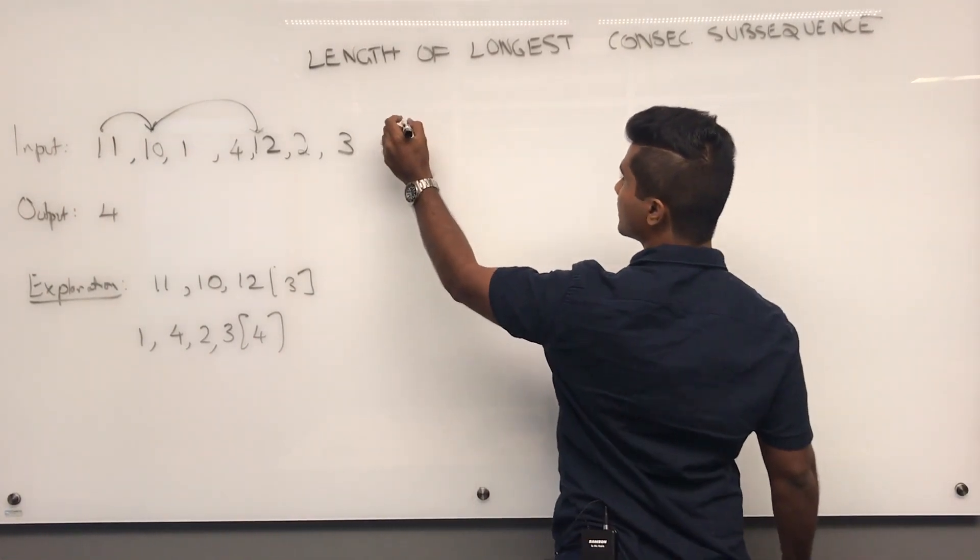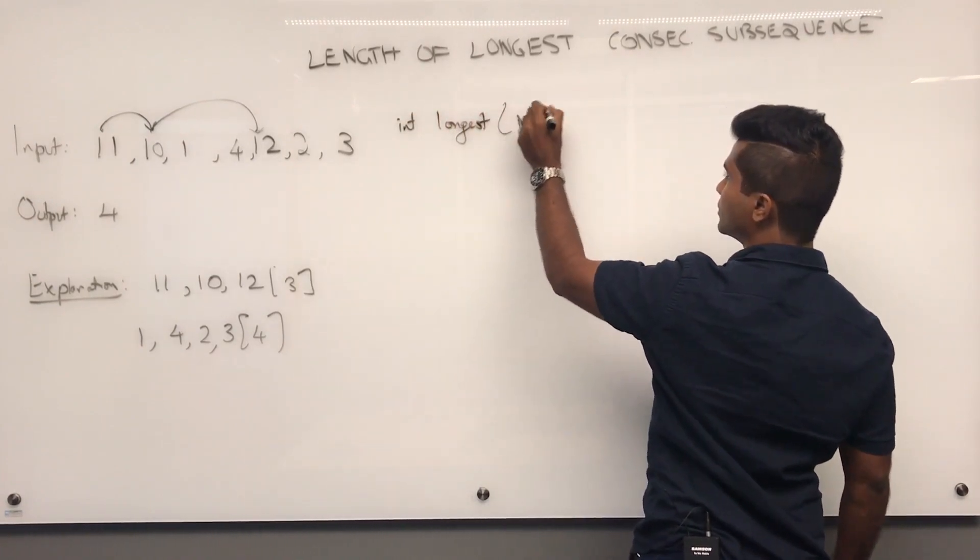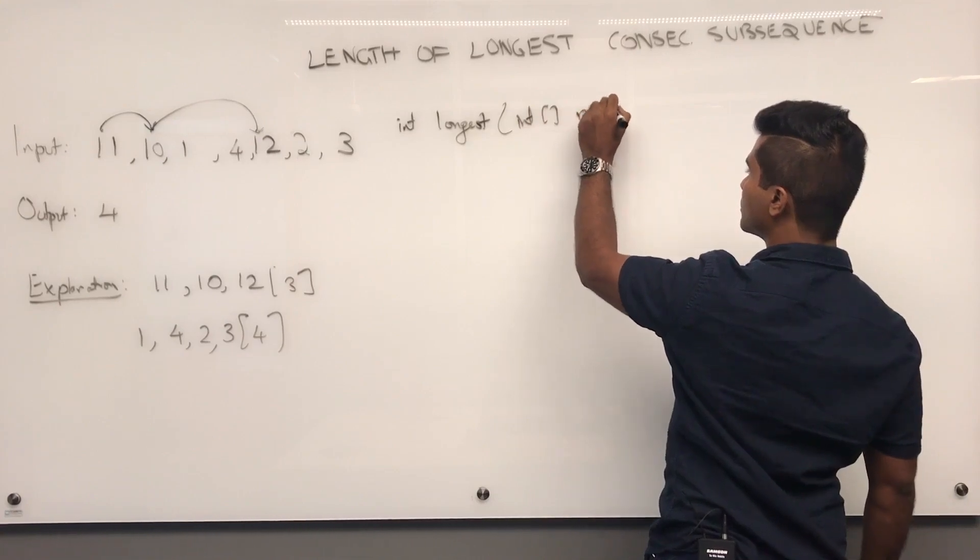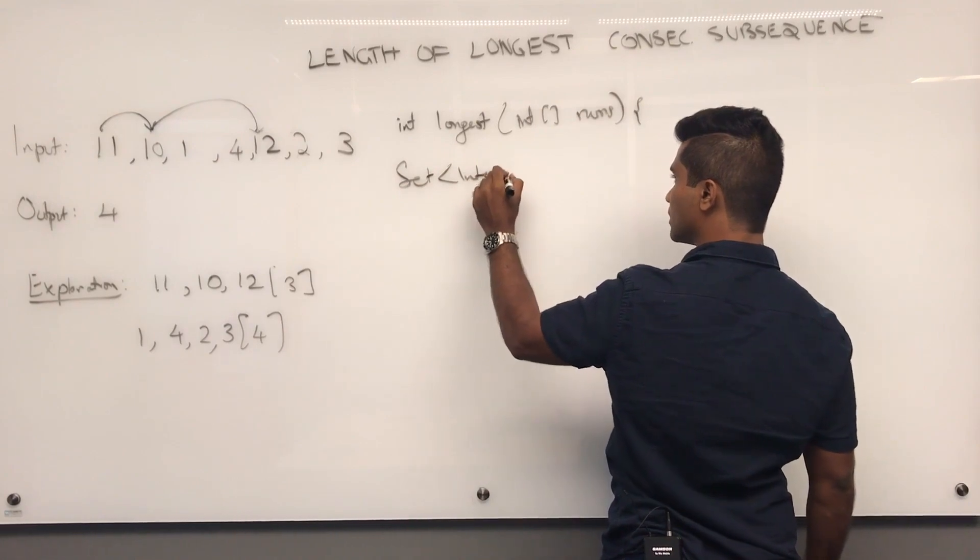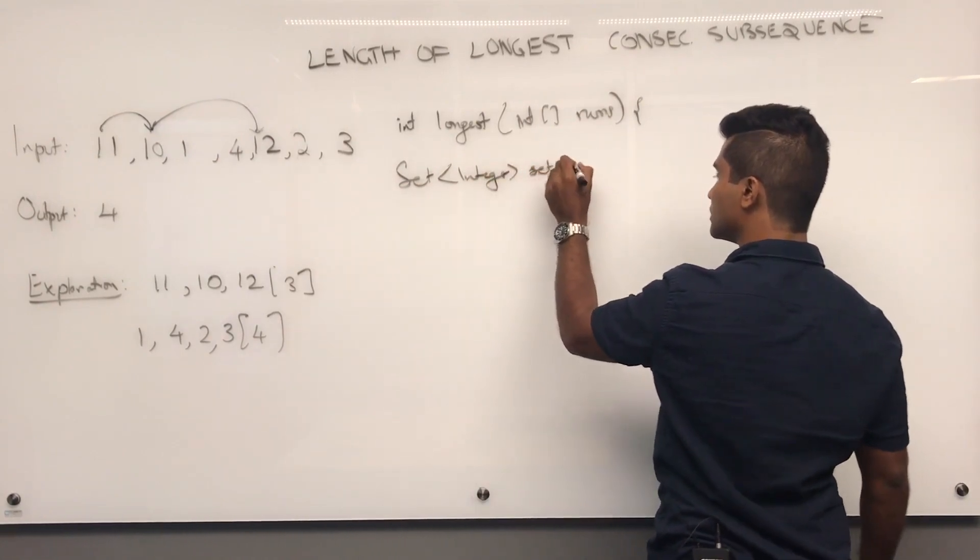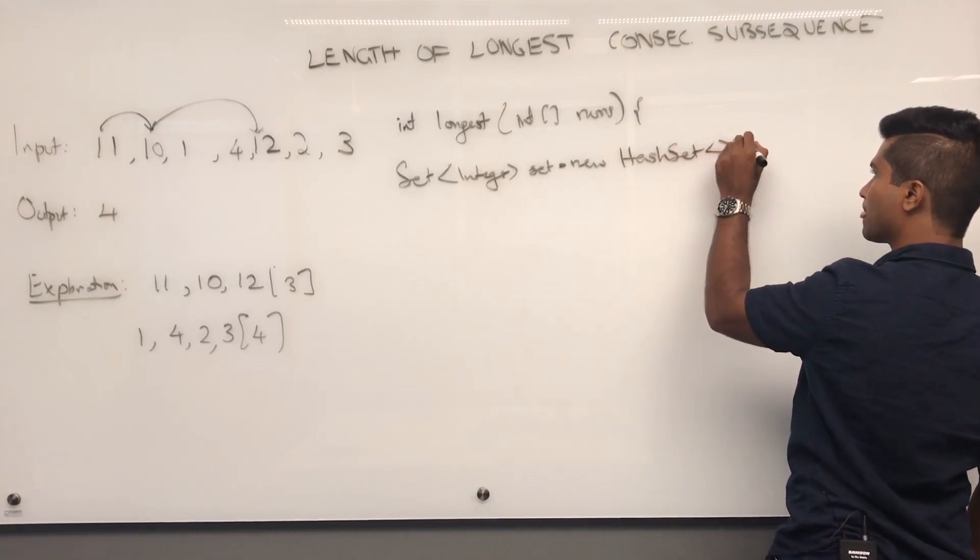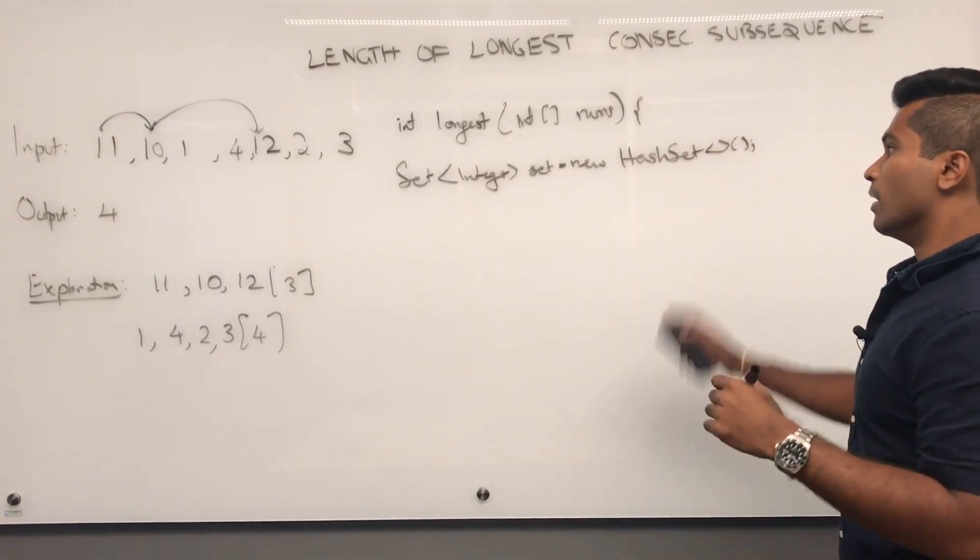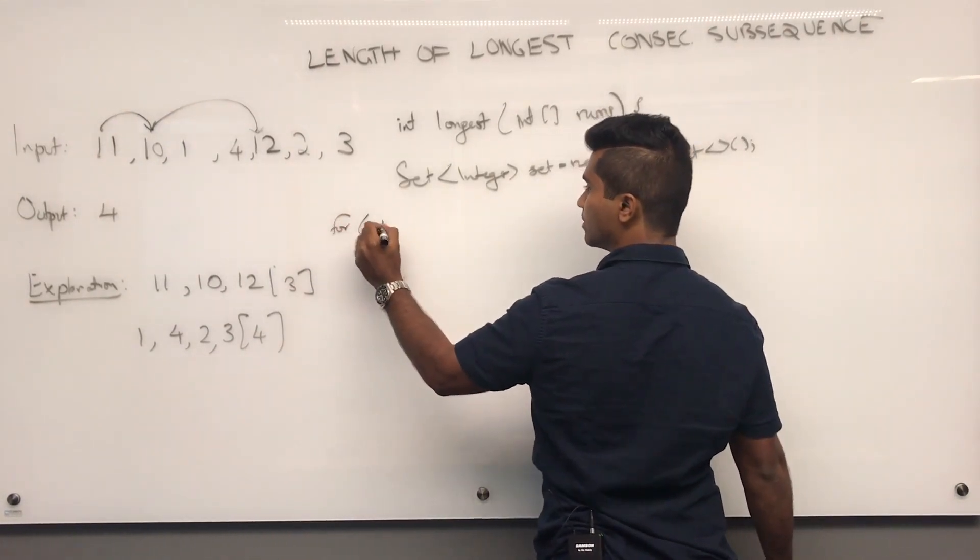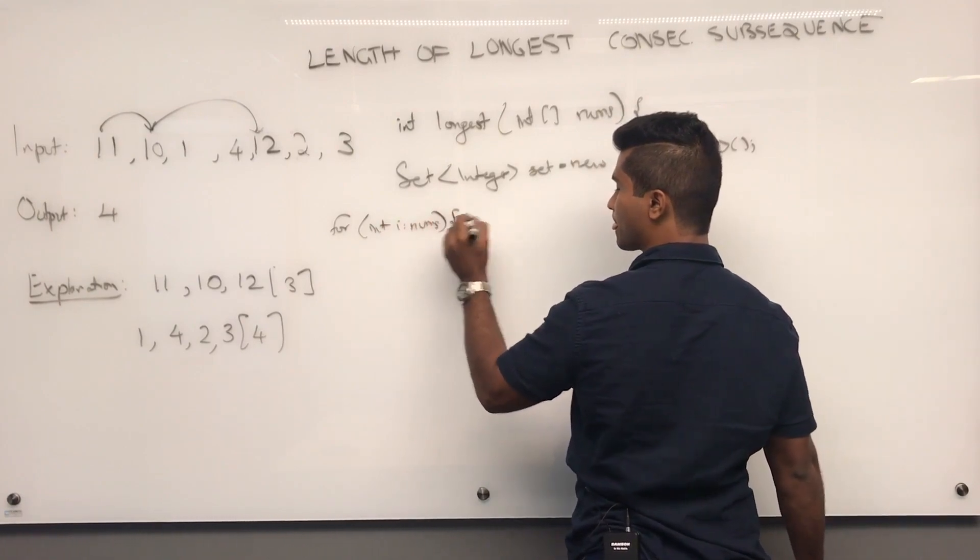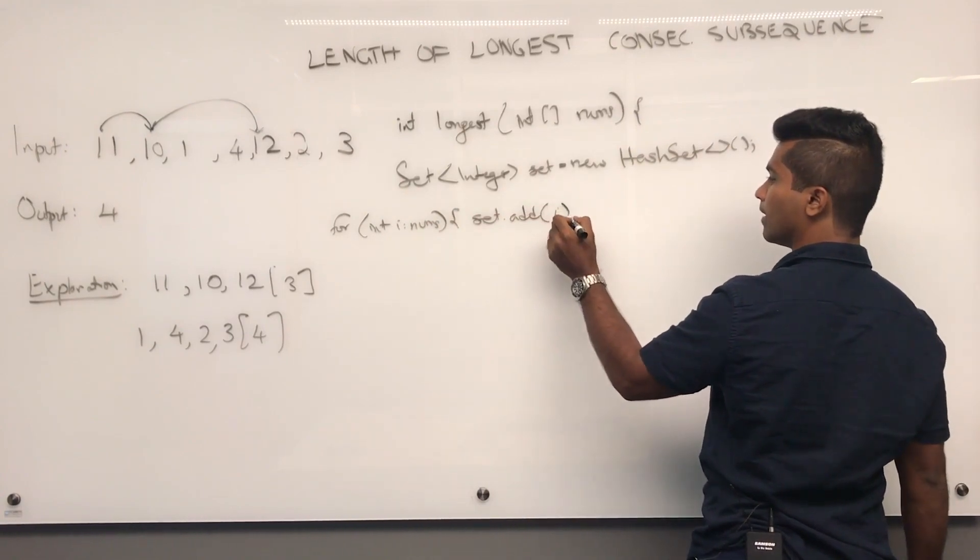Now, to begin, we'll say int longest, given an integer array of nums. And we create a set of integers. numbers is a new hash set. And this one is just going to be loaded with the numbers from the numbers array.